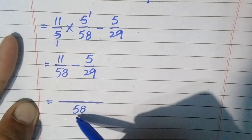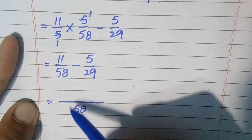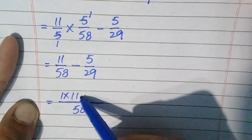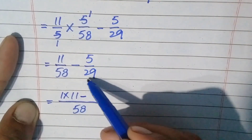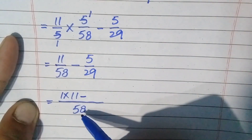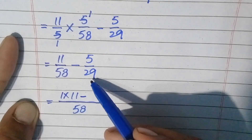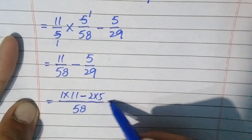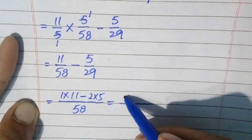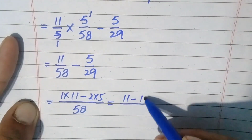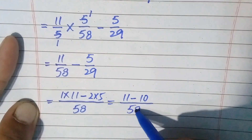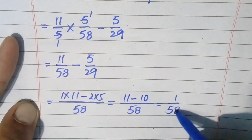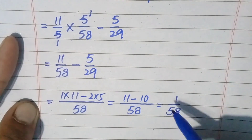To further simplify: divide 58 by 58, which gives 1 — multiply 1 with 11, giving 1 times 11. Then divide 58 by 29, which gives 2 — multiply 2 with 5, giving 2 times 5. Write 58 in the denominator. So: 1 times 11 is 11, minus 2 times 5 is 10, over 58. Subtracting 10 from 11 gives 1. The denominator is 58. So my dears, 1/58 is the final answer to this math question.